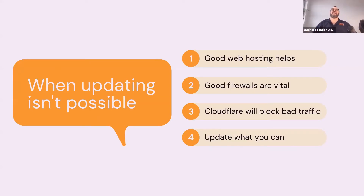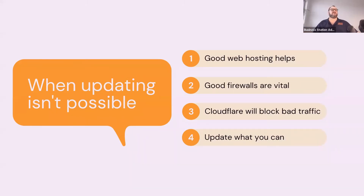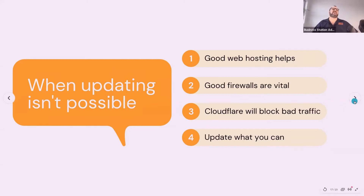You can even put challenges and blocks in front of particular countries if you find you're always getting trouble from traffic coming from Russia, Ukraine, Iran, or North Korea — nations known as sources for bad actors and bad traffic. And finally, update whatever you can.